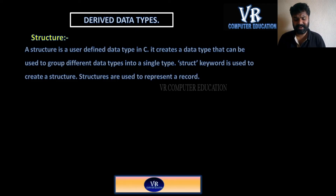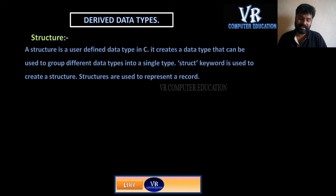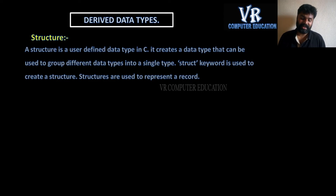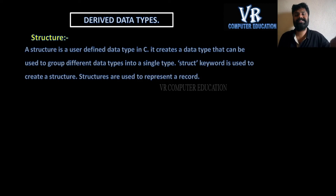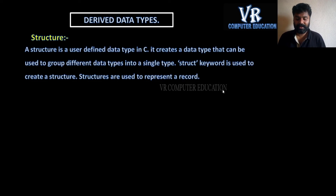Next, structures. A structure is a user-defined data type in C. It creates a data type that can be used to group different data types into a single type. Normally we declare individual data types like int, char, float — but when you group all of them together, that becomes a structure. The struct keyword is used to create a structure, and structures are used to represent a record.